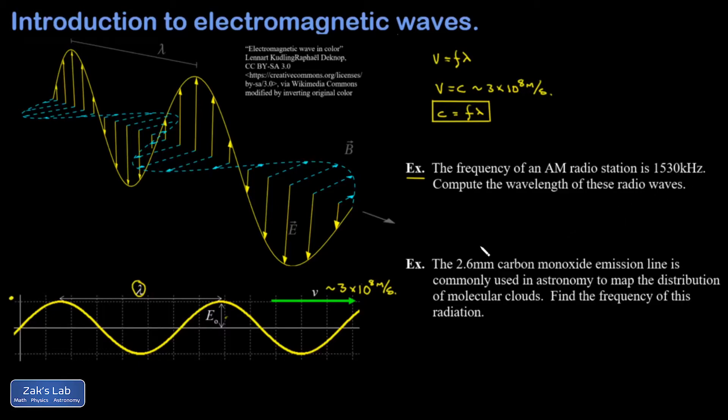And I want to compute the wavelength of these radio waves. Part of the point of this example is just to point out that radio waves are one type of electromagnetic radiation. To get the wavelength, I solve my little equation for lambda. And that's just C over F. Remember the prefix kilo means 10 to the third. So 1530 times 10 to the third hertz.